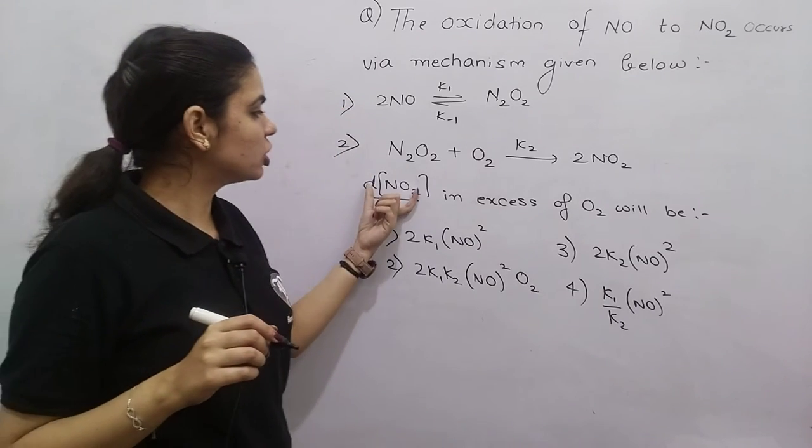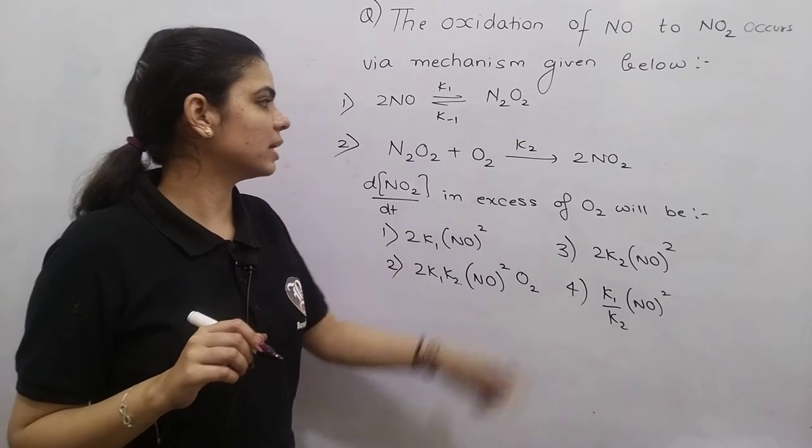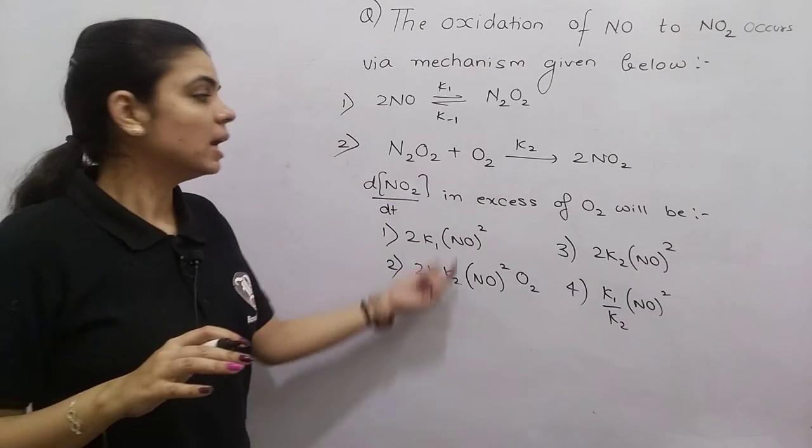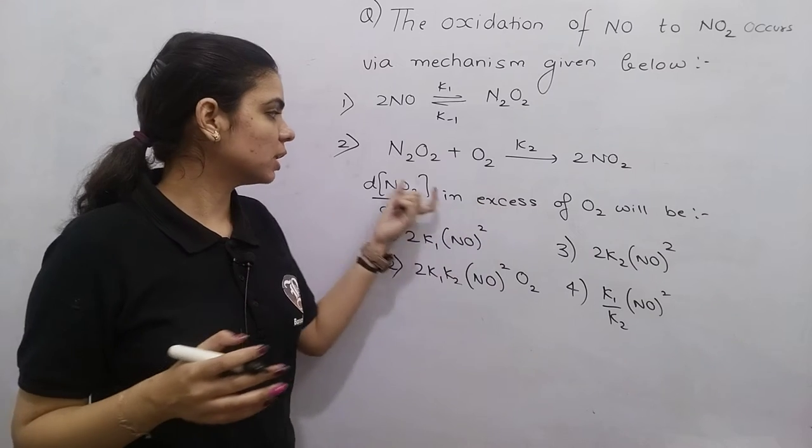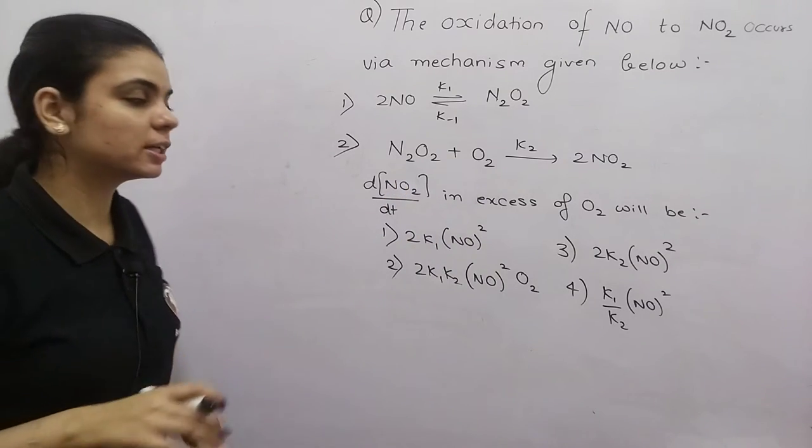We need to find the rate of change of concentration of NO2 in the excess of O2. When O2 is present in excess, at what rate will NO2 concentration change?